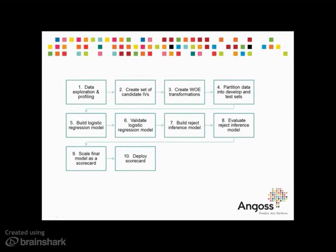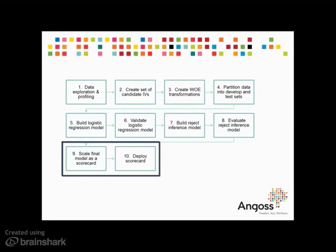The next steps in the process depend on whether an acceptance or behavioral scorecard is being developed. For acceptance scorecards, a reject inference model is the next step. However, for a behavioral scorecard, the next step is to scale the logistic regression to a scorecard and deploy.